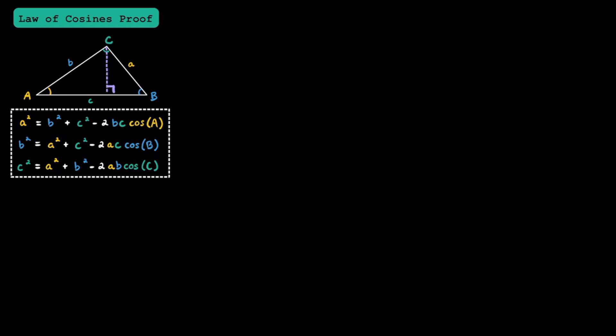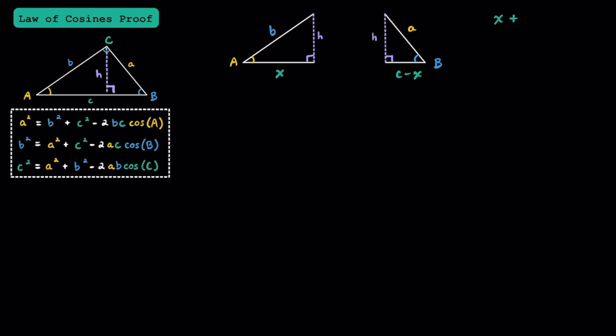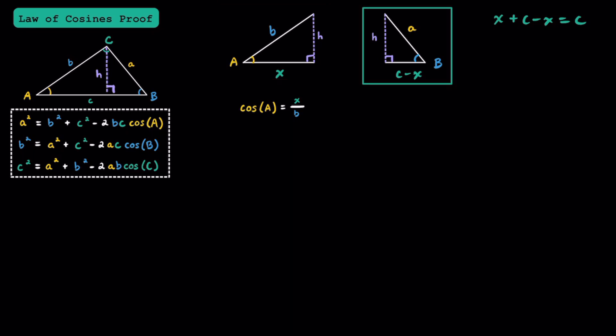This is going to create two right triangles. By drawing h, we can separate this into two right triangles. Since the base of the triangle on the left is a new measurement, I'm going to call that x, and I'll call the base of the other triangle c minus x. I'm using these two specific expressions because if you add them together — x plus (c minus x) — this is just equal to c, which is the entire length of the original base. For the triangle on the left, I'm going to use the cosine function — adjacent over hypotenuse — so cosine of angle A equals x over b.